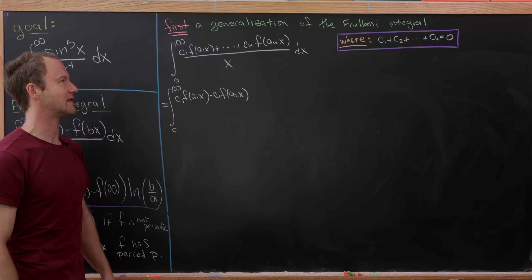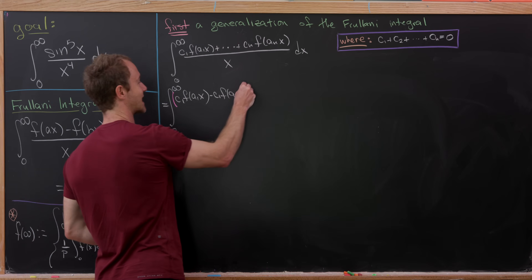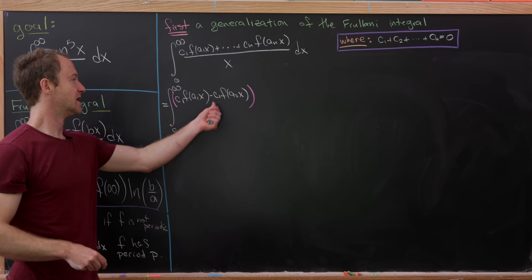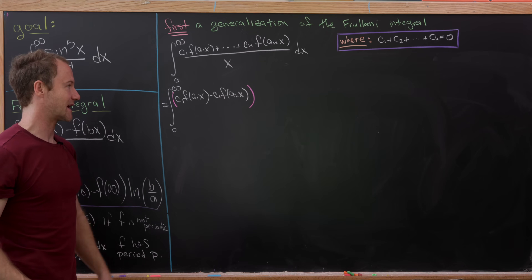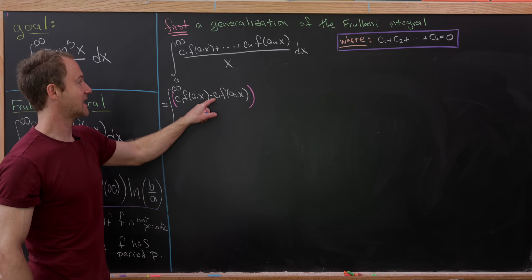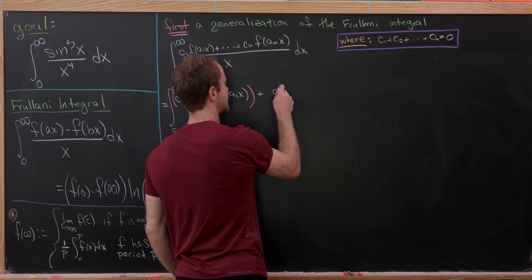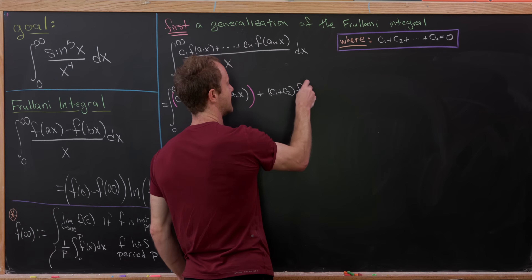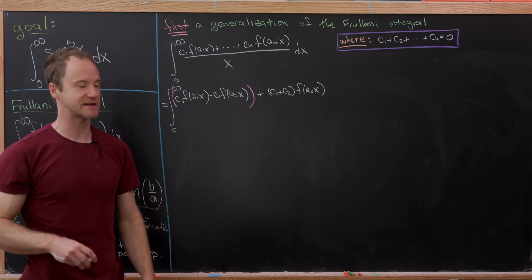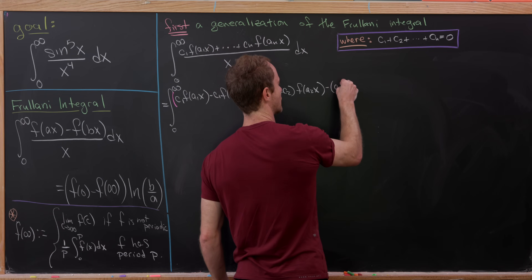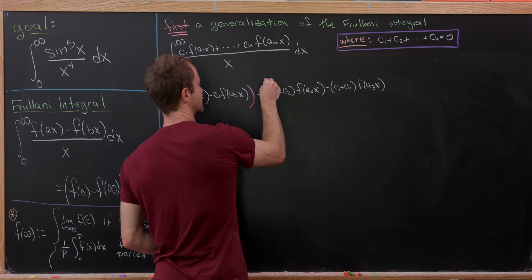Not only do we have more terms in the numerator, but we just subtracted a term — minus c₁f(a₂x) — that doesn't exist in the original expression, so we need to add it back. We combine it with the coefficient on f(a₂x), giving plus (c₁ + c₂)f(a₂x), and then subtract the same coefficient times f(a₃x), giving minus (c₁ + c₂)f(a₃x). That subtracted term also doesn't exist above, so we add it back in, and the process continues.